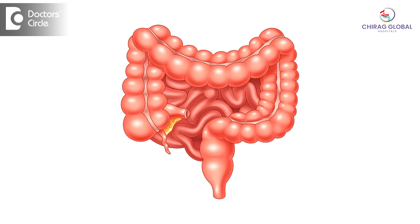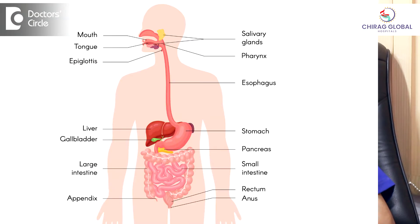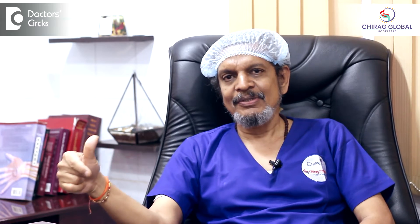Intestinal obstruction. The intestine is a tube through which food passes. When we eat food from the mouth, it goes to the stomach through a pipe called the esophagus or food pipe. Then it goes into the stomach, it gets partly digested, then it goes to the small intestine. From the small intestine it goes to the large intestine, from there it comes to the rectum and comes out of the anal opening. It is a single tube from the esophagus to the anal canal.